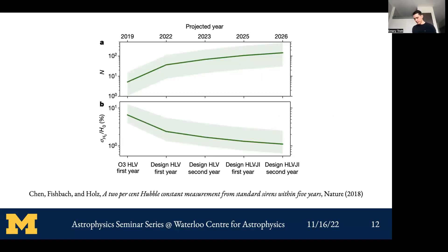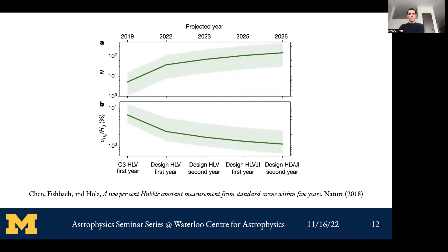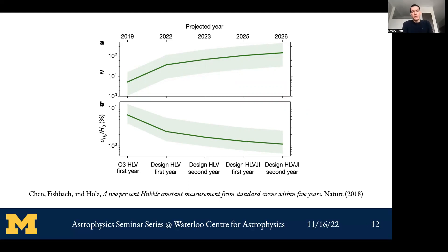How well do we expect to measure the Hubble constant with gravitational waves? Supernova measurements crossed the one-percent threshold recently. A Chen, Fishbach, and Holz Nature paper from 2018 — titled something like 'A Two Percent Hubble Constant Measurement from Standard Sirens within Five Years' — primarily relies on an increase in the number of binary neutron star detections. With tens of events by end of 2022, we'd be approaching this two-percent measurement.